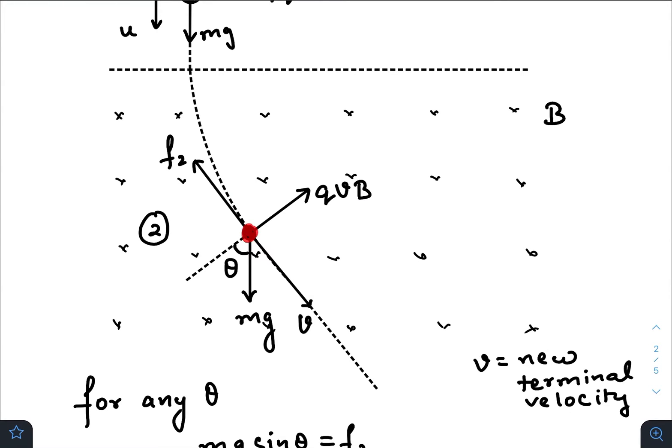That means after it reaches the new terminal velocity, after following a curved path, it will follow a straight line path. And along this straight line the net force on the ball must be zero.